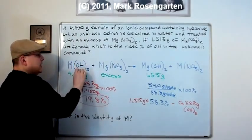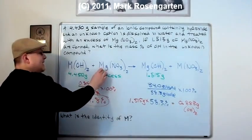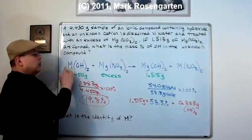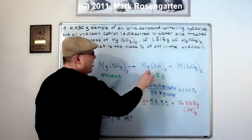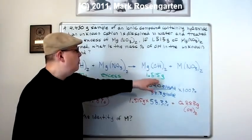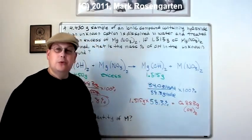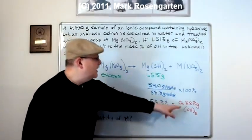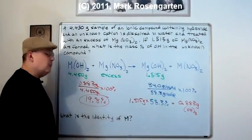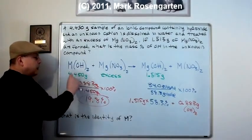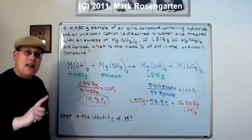So to find the mass percent of hydroxide in this unknown compound, well, the compound itself weighs 4.450 grams. So we divide this by 4.450 grams, cancel that out, multiply by 100%, and that comes out to 19.8%. Let's recap this. The metal hydroxide had all of its hydroxides removed by reacting it with a magnesium nitrate solution. The magnesium stripped off every single hydroxide ion from this metal because we use an excess amount of magnesium to guarantee we had enough magnesium to do the job.